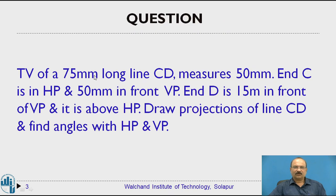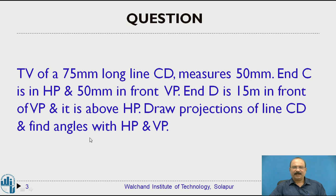Now the question: the top view of a 75 mm long line CD measures 50 mm. C is in HP and 50 mm in front of VP, and D is 15 mm in front of VP and it is above HP. Draw the projection of line CD and find the angles with HP and VP.